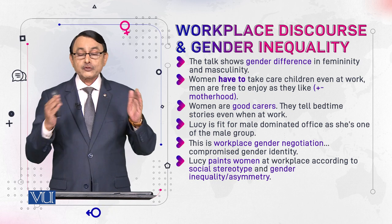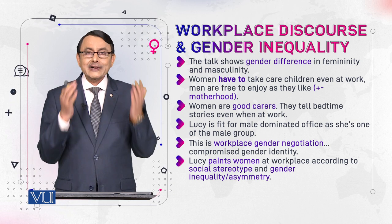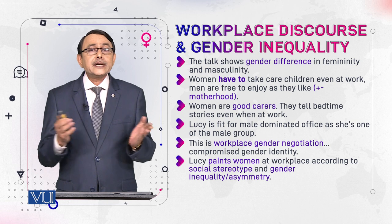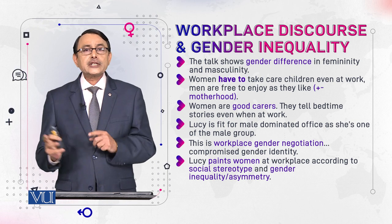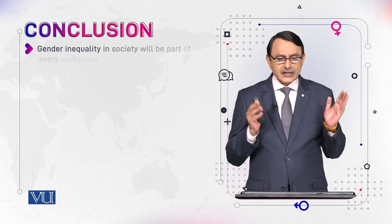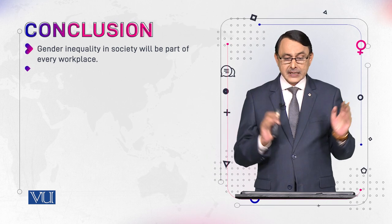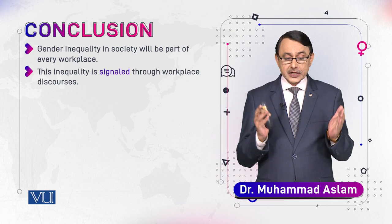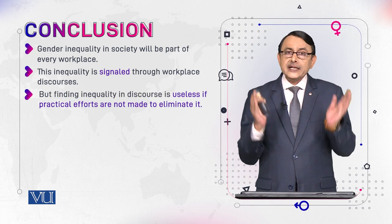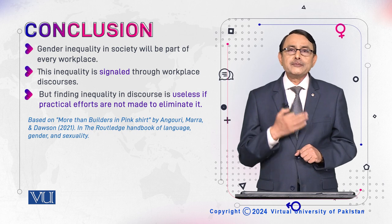Lucy paints women at the workplace according to social stereotype. Gender inequality and asymmetry is hinted at when she says men can do this but women cannot. Gender inequality in society will be part of every workplace. This inequality is signalled through workplace discourse, as the dialogue between Mary and Lucy tells us. But finding inequality in discourse is useless if we do not do anything to remedy and remove this inequality.